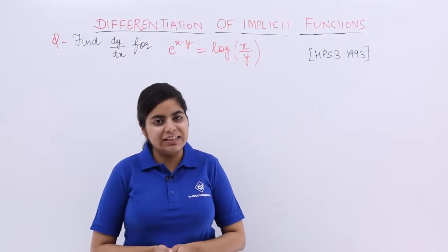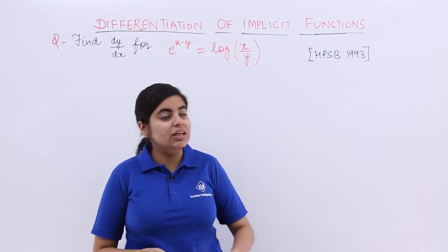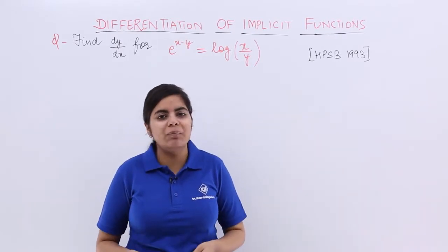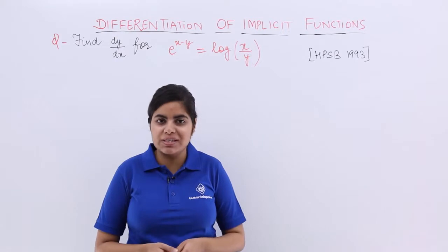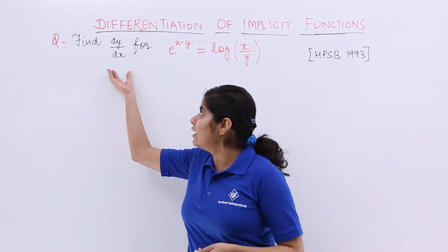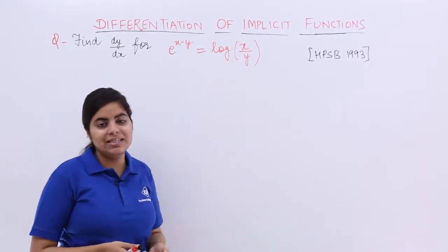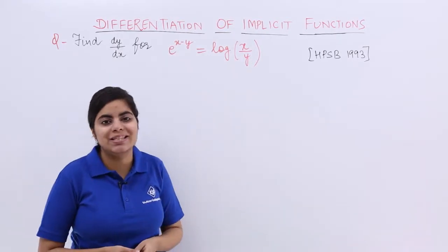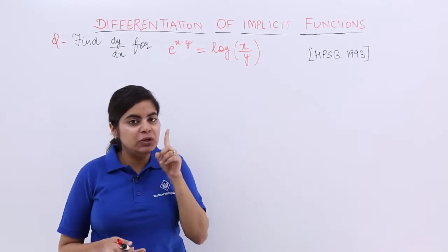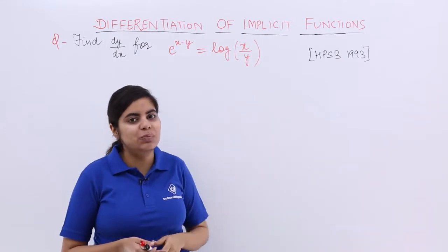In this video, let's see another numerical problem which was asked in the year 1993 in a state board examination. The problem was based on differentiation of implicit function. The question says: find dy/dx for e raised to the power x minus y equals log x upon y. The question has both involvement of exponential function and logarithmic function.